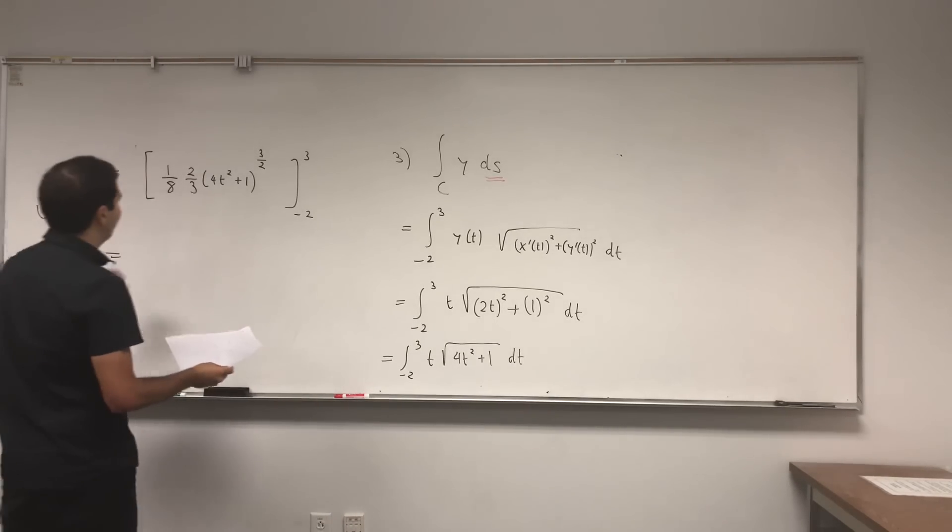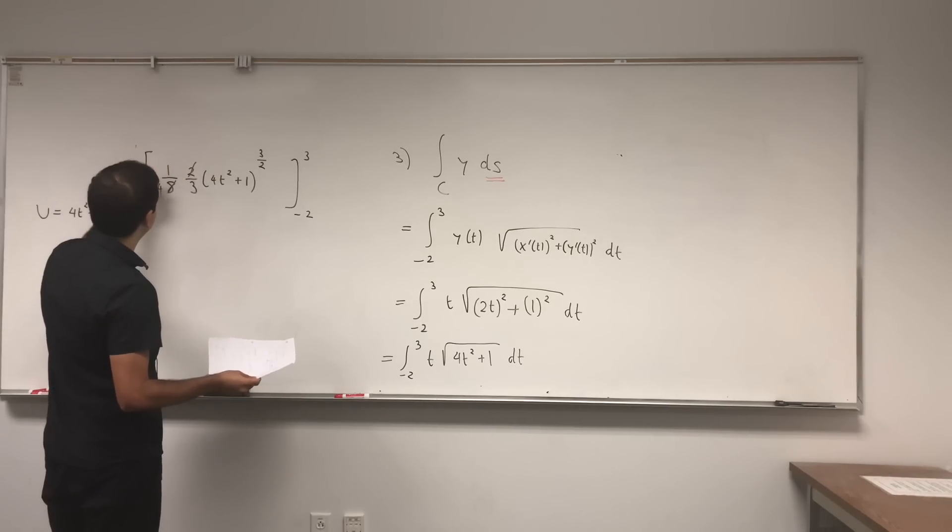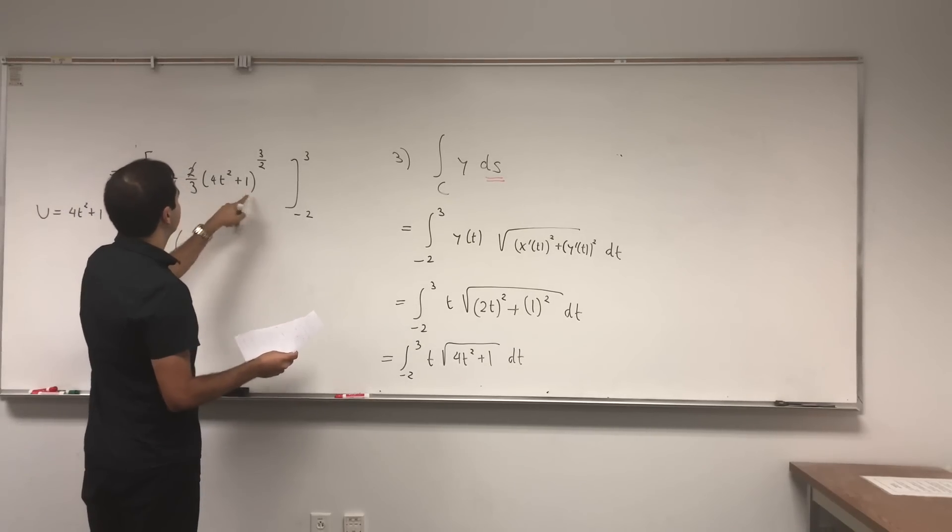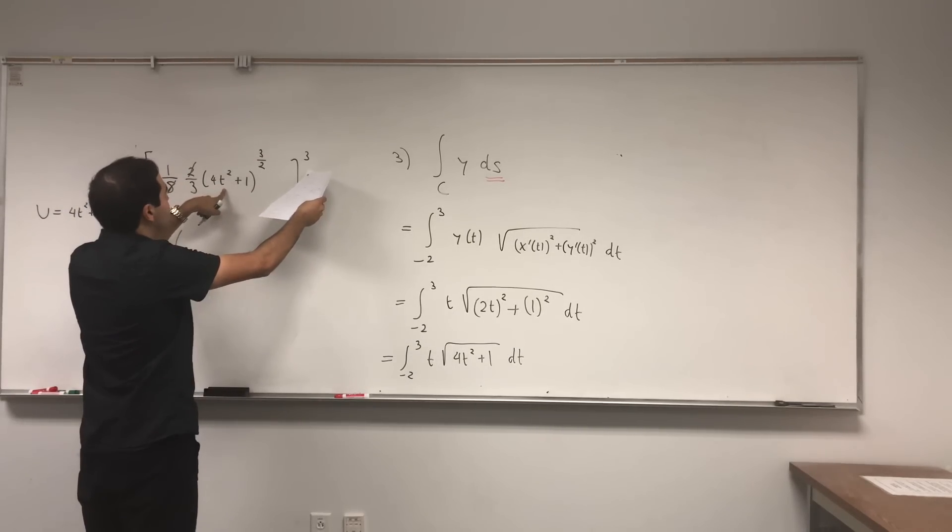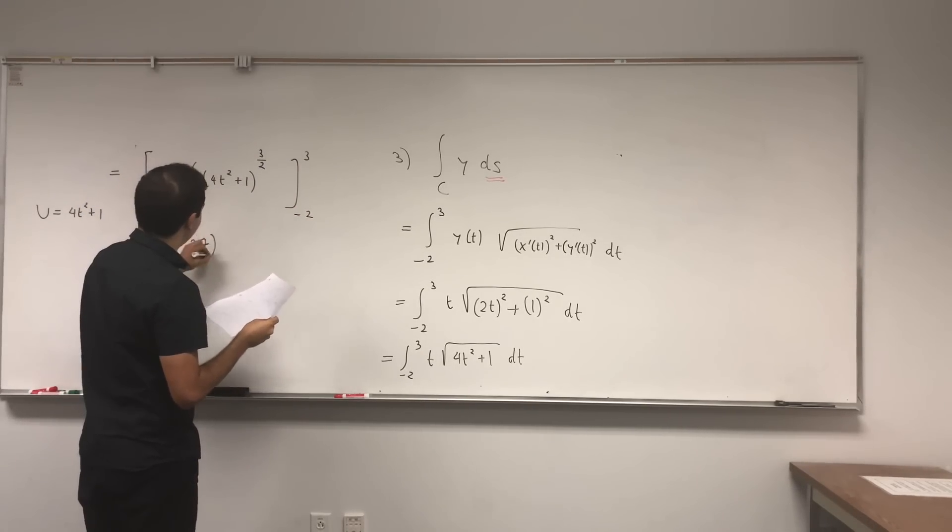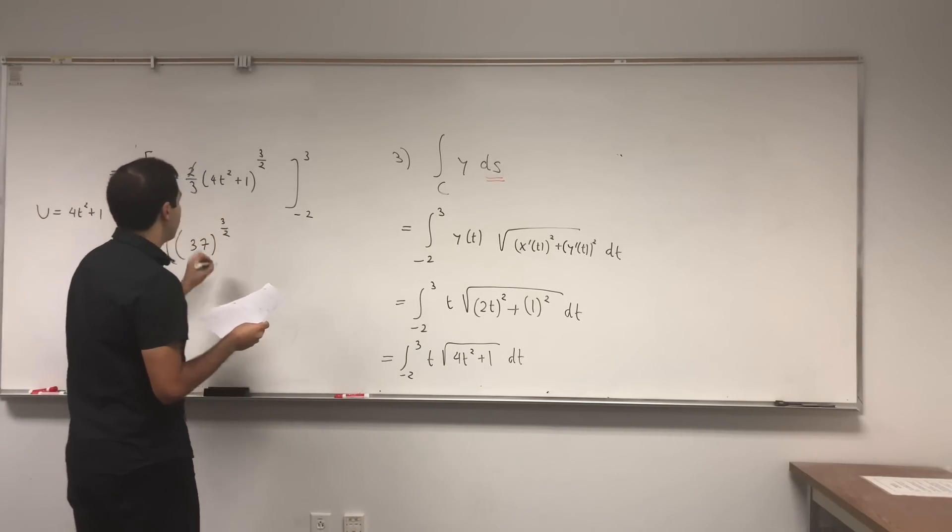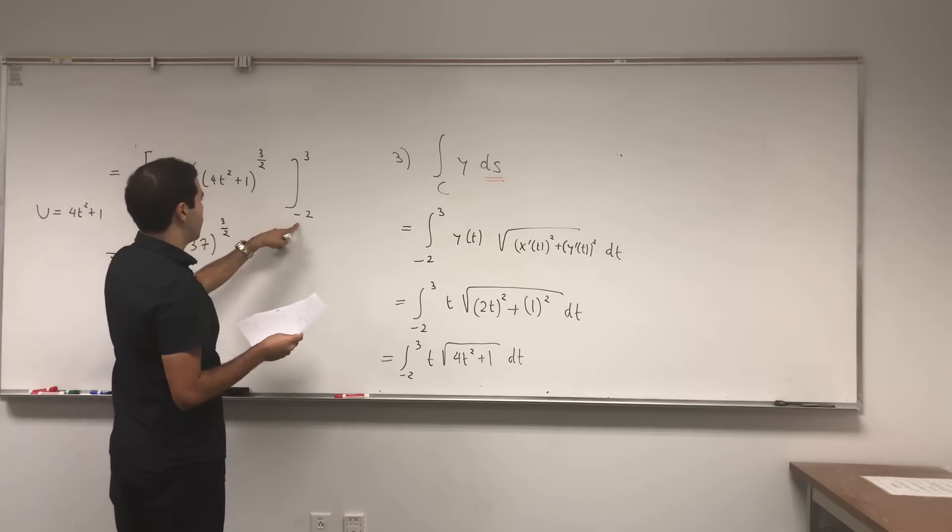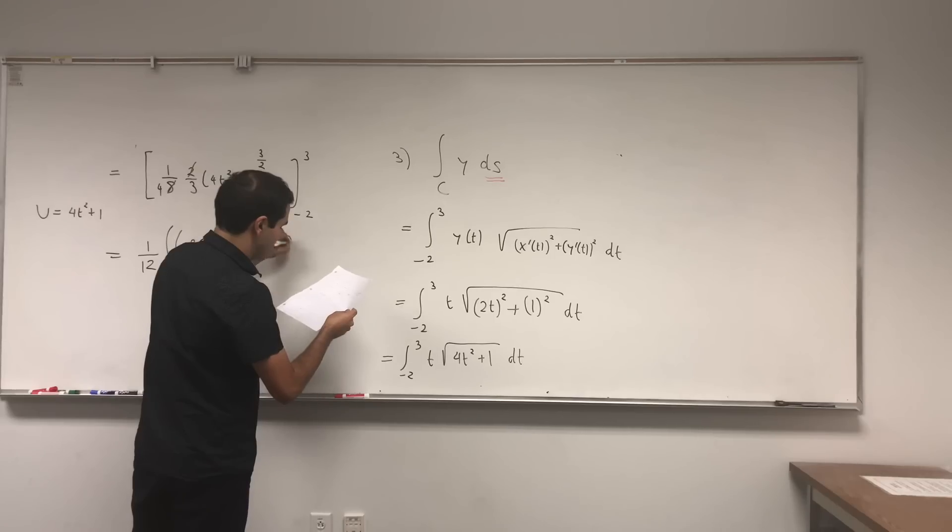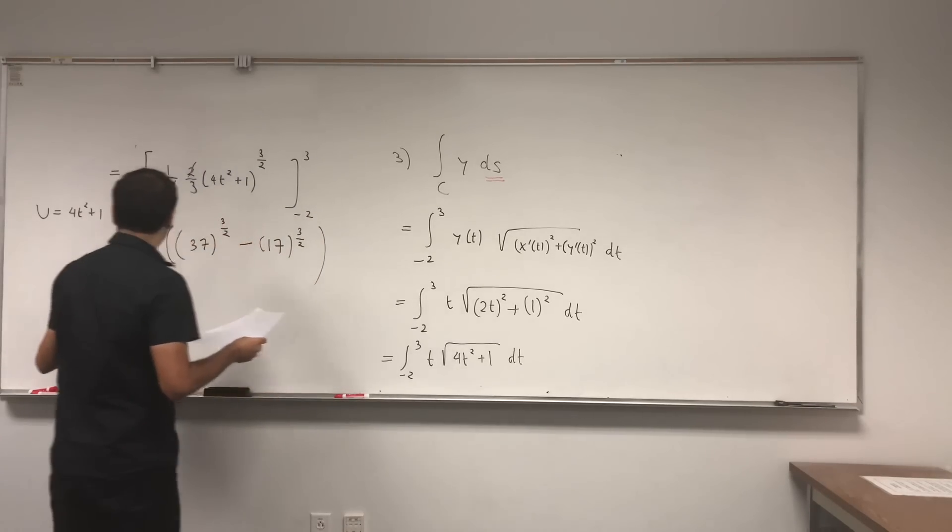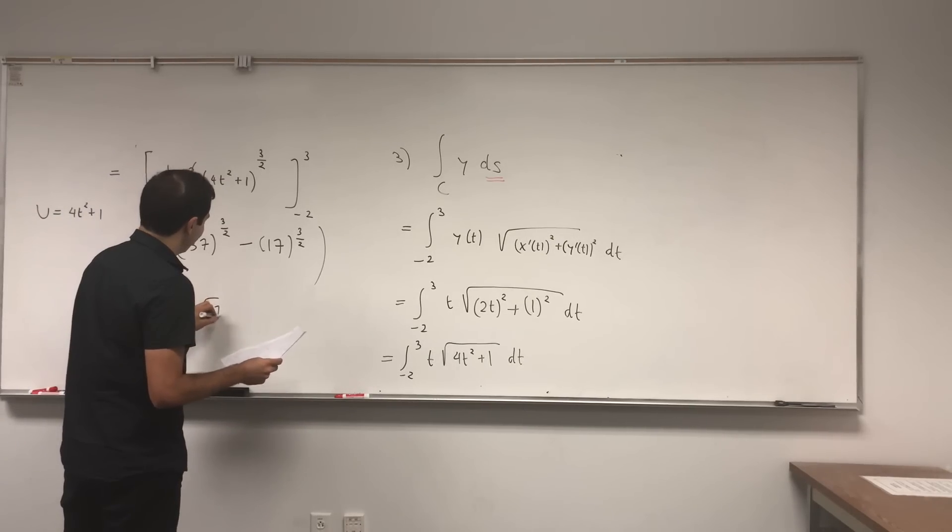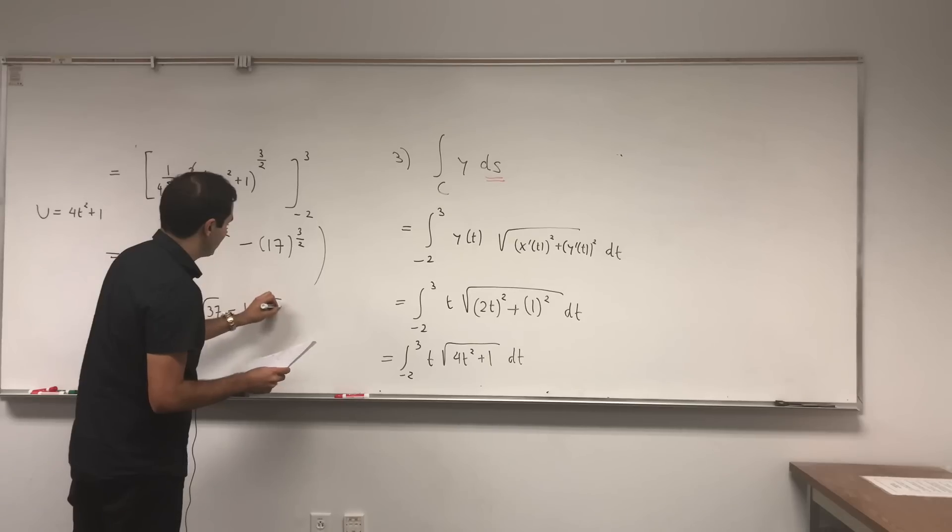And then it turns out this simplifies. The 2 and 8 becomes 4 and you get 1 over 12. So 4T squared plus 1, so 3 squared that's 9 times 4 is 36, and so 37 to the 3 halves, minus so minus 2 squared that's 4 times 4 is 16 plus 1 is 17, so it's 17 to the 3 halves. And if you want you can just simplify it a little bit further. That's 37 square root of 37 minus 17 square root of 17.